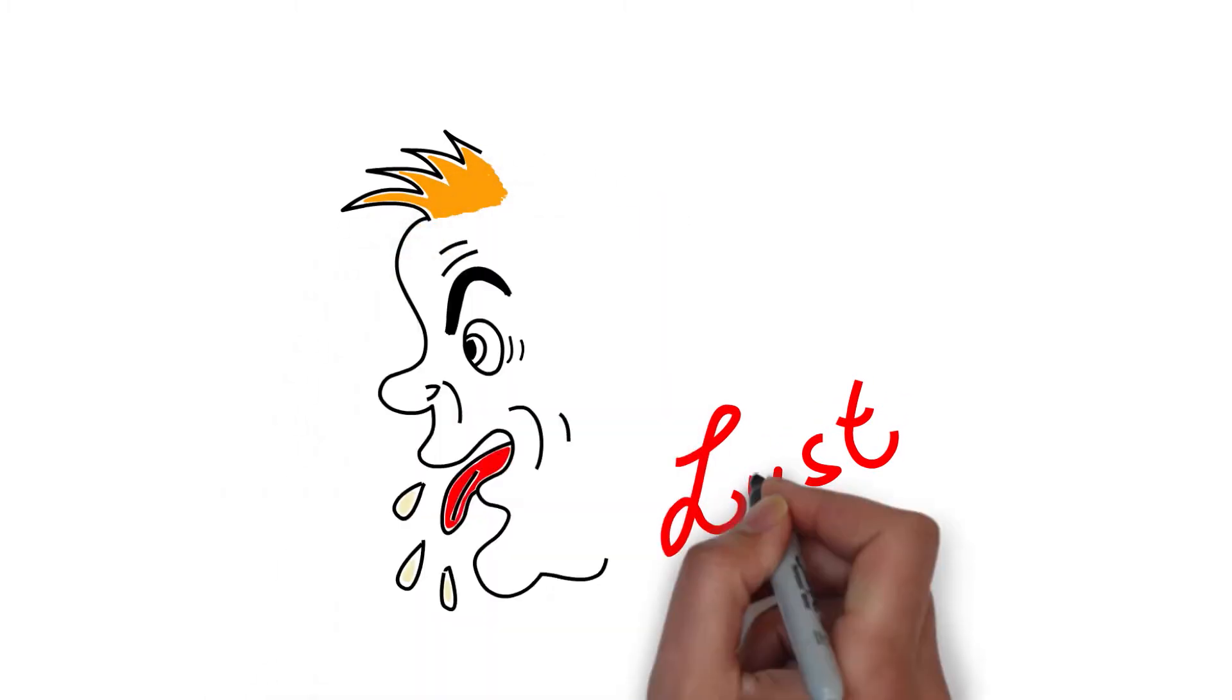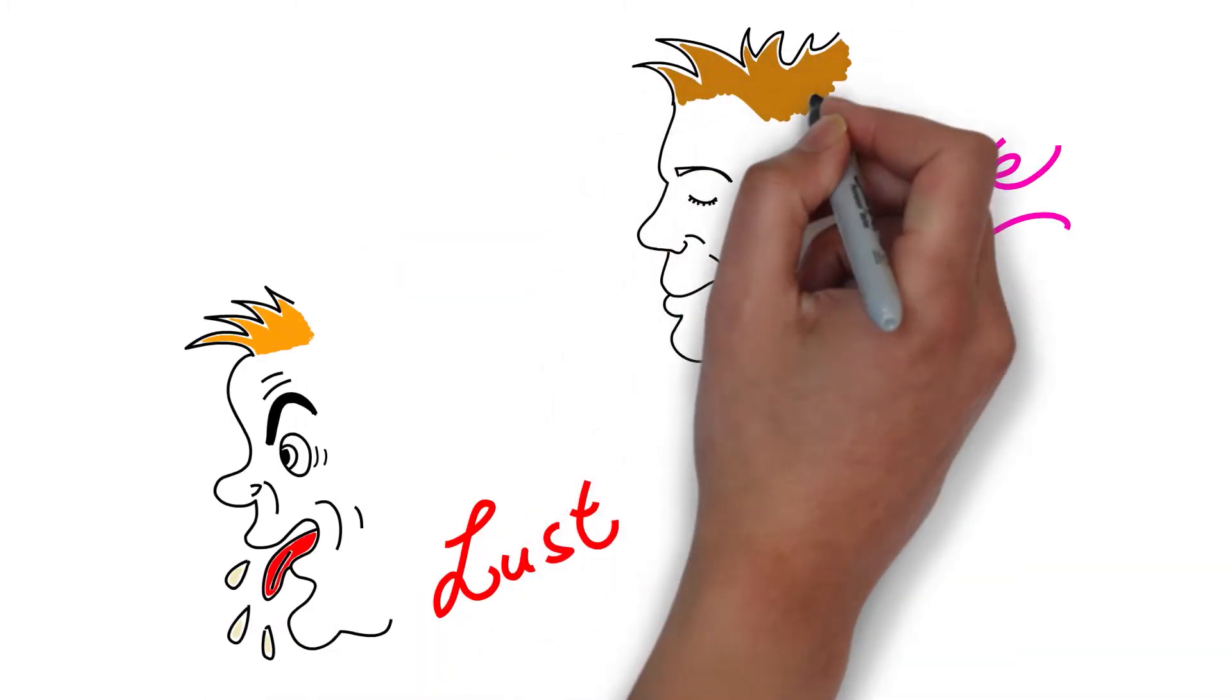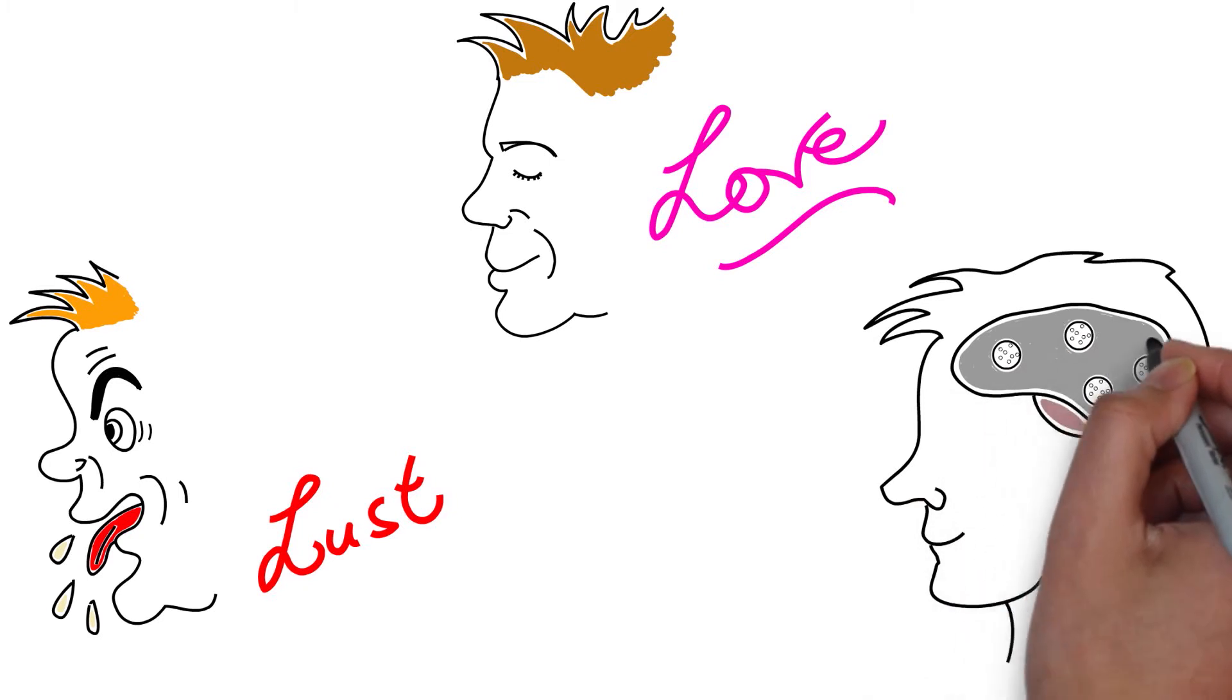There are three different types of love: lust, romantic love, and long-term attachment, each associated with different neurotransmitters, all hardwired into the brain.